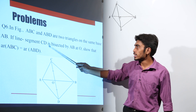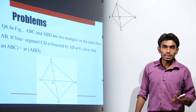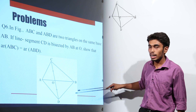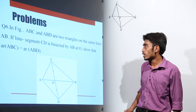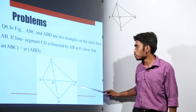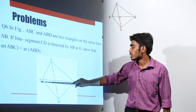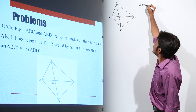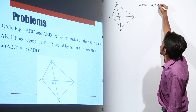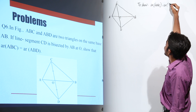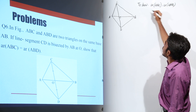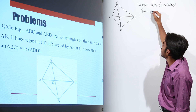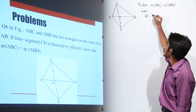This is the common base. If line segment CD is bisected by AB at O — bisected means divided into two equal parts — so CD is bisected by line segment AB, that means CO is equal to DO.